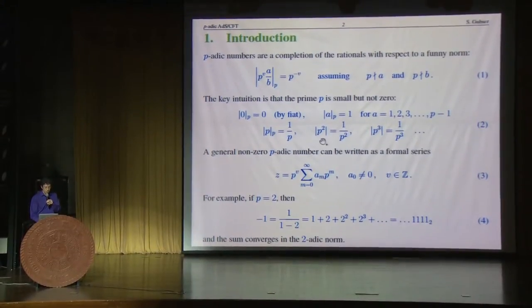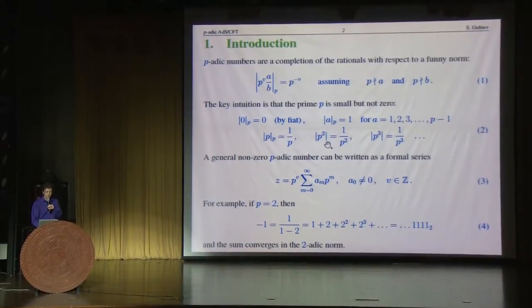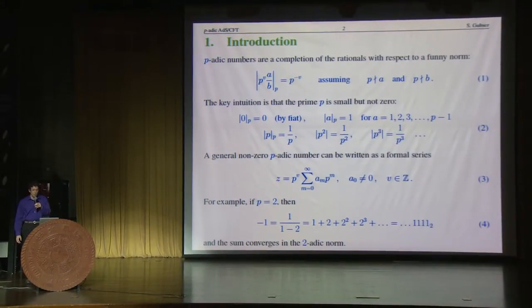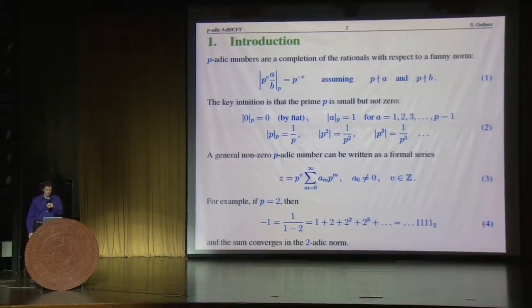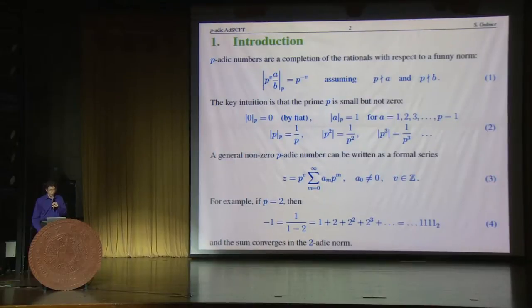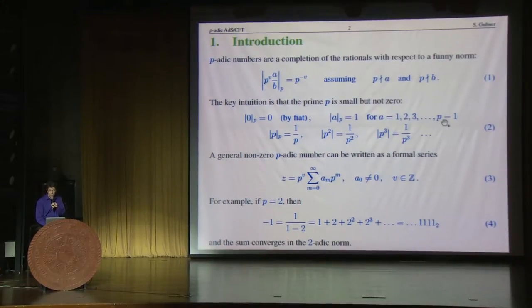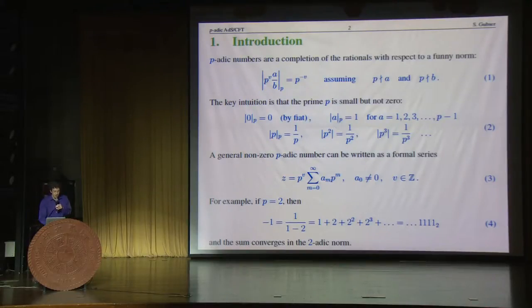The p-adic norm — there should have been a subscript P right there — of P squared is 1 over P squared, and so forth. Whereas if you have some number A which is 1, 2, 3, up to P minus 1, its p-adic norm is 1. And by fiat, we simply say that 0 has p-adic norm of 0.